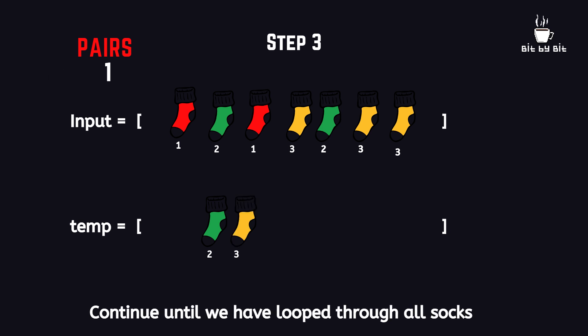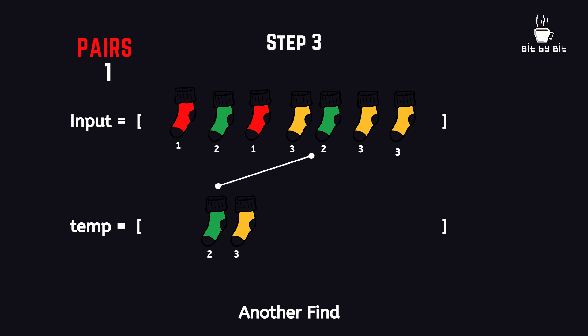Moving on to the fourth element from the input list, the yellow sock is not in the temporary list, so we add the yellow sock and move on to the next. Now another pair is found for the green sock. Same thing — we remove the green sock from the temporary list and increment the counter variable, and move on to the next sock in the input list.